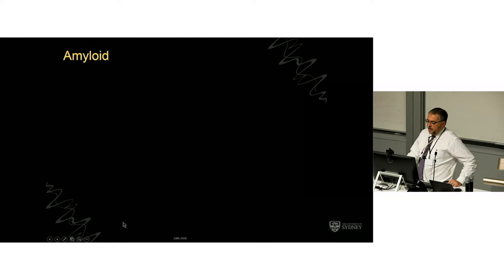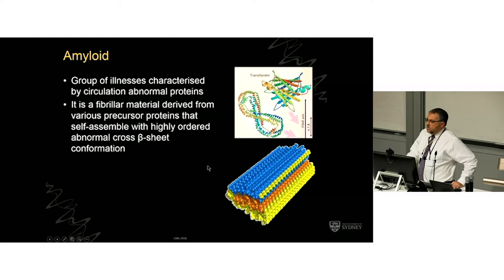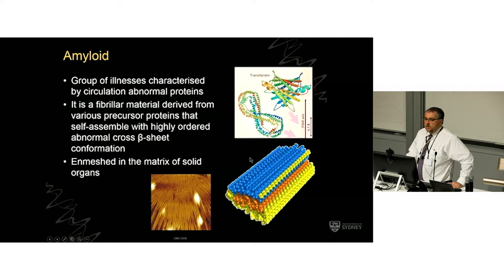Amyloid is not one illness — it's a bunch of illnesses which just happen to look the same. Whatever the illness, what's going on is that in your circulation you have some abnormal protein which, no matter where it comes from, gelatinizes. It sets within the mesh of the tissues in these so-called beta-pleated sheets. Fundamentally, it gelatinizes, and within the tissues it's like you've dipped a sponge into honey.